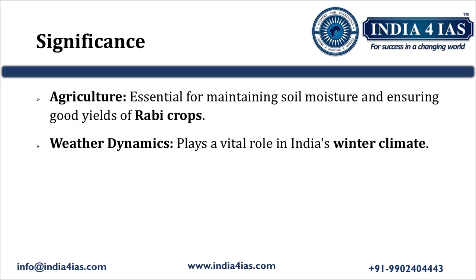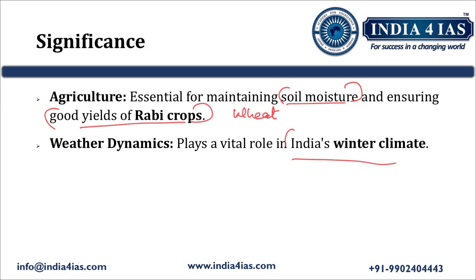Western Disturbances are of great significance. They are essential for maintaining soil moisture and ensuring good yields of Rabi crops, with wheat being a key example. They are very essential for Rabi crops in the Northwestern part of India and also play a vital role in India's winter climate.